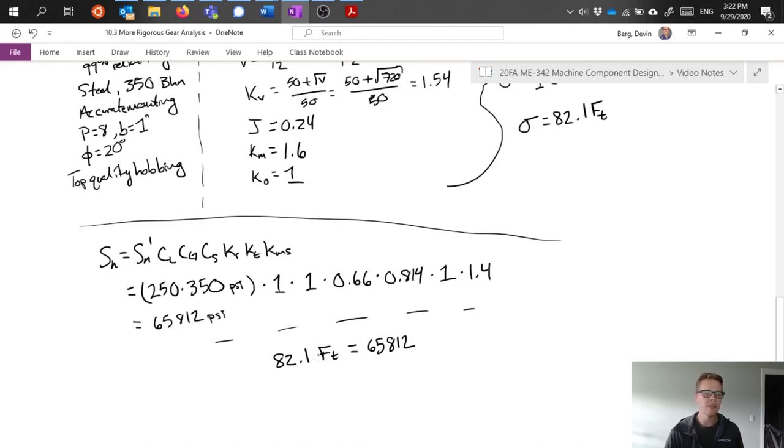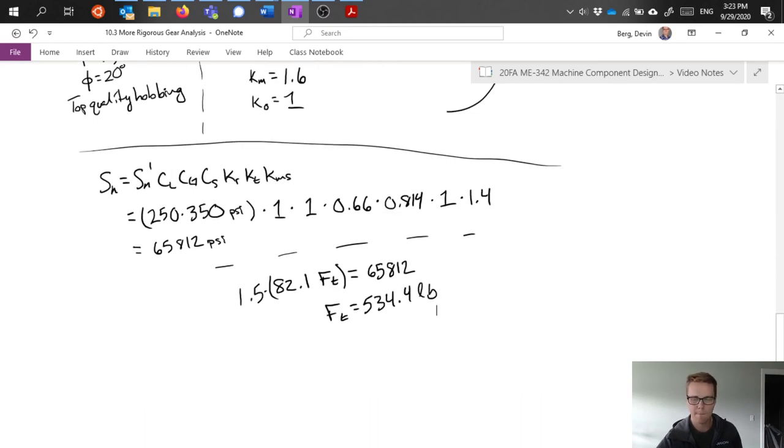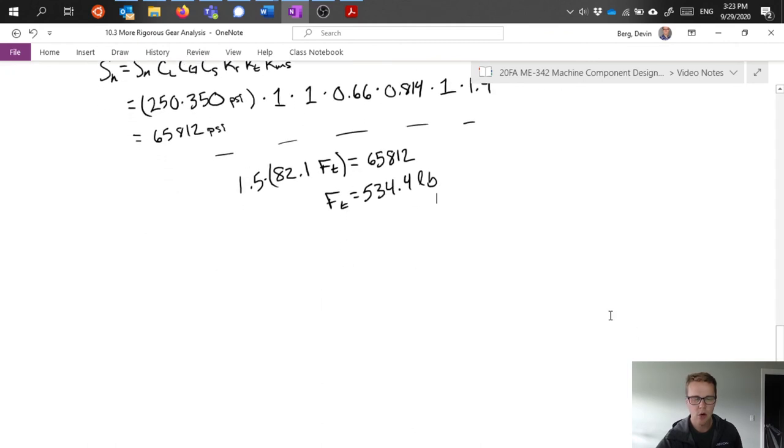The one thing I haven't included yet is we said we wanted a safety factor of 1.5. Two ways we can think about this: we can reduce the fatigue limit or increase the stress to factor in that 1.5. I would go ahead and just pull this out and say I need to multiply this times 1.5 to build in my safety factor there. If I do this, then I calculate that FT with a safety factor of 1.5 would be 534.4 pounds. So that's the load I can transmit at the gear tooth and presumably not shear that tooth off under this fatigue loading condition.